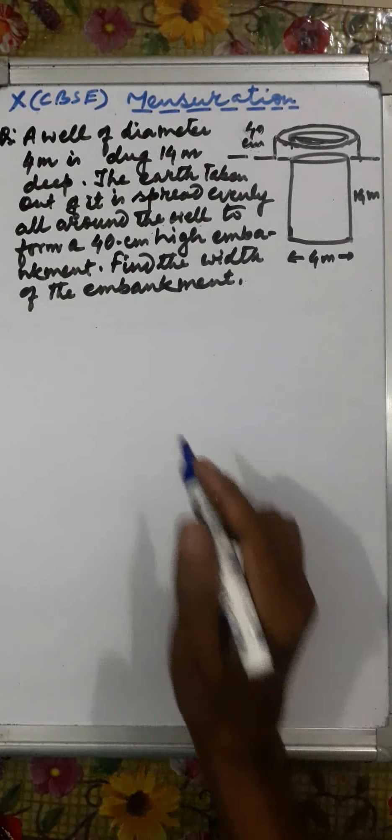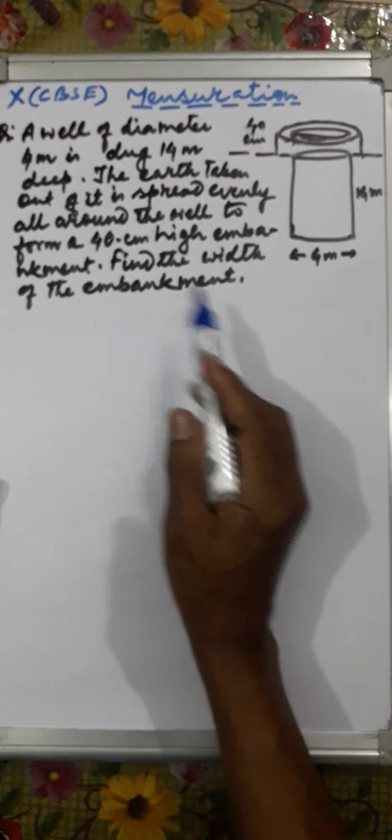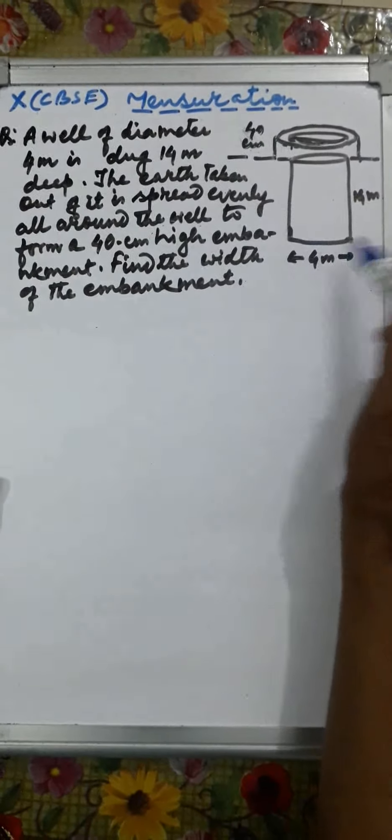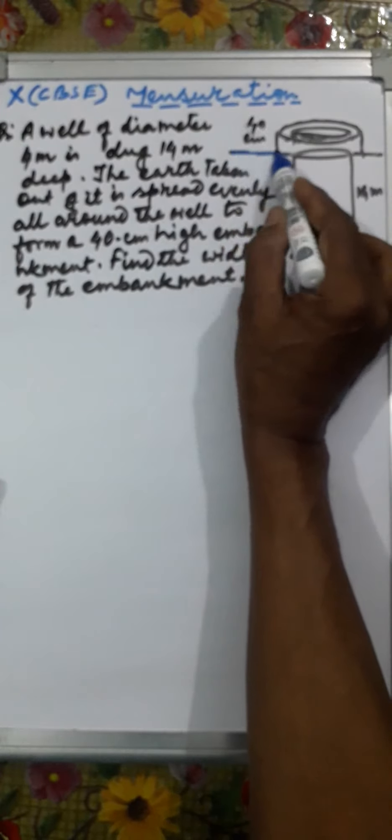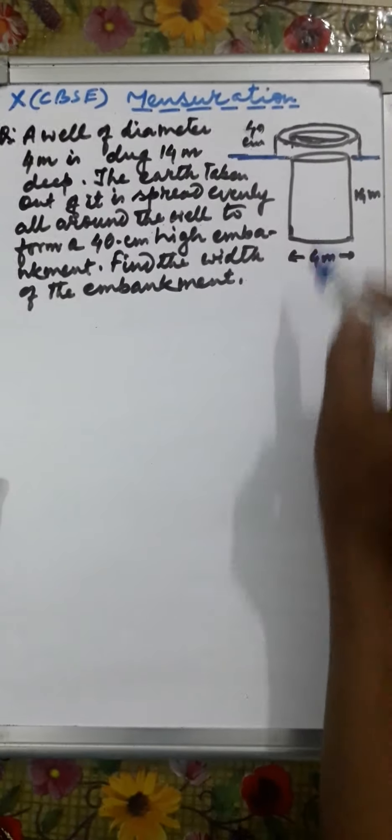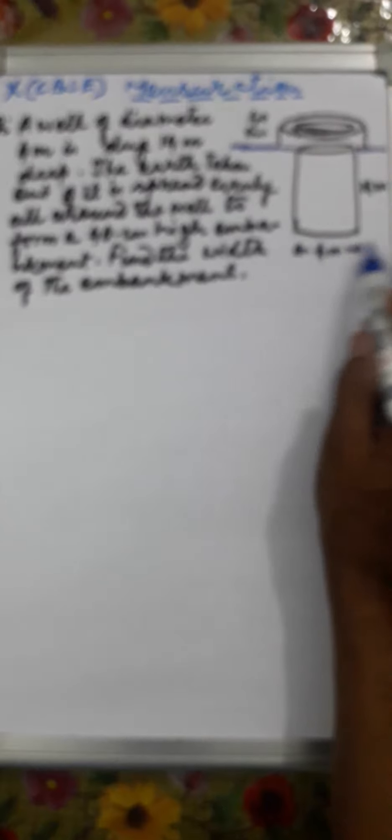Students, let us solve another question of volume and surface area for standard 10. Check the question: a well of diameter 4 meters is dug 14 meters deep. This is the well — this is the ground level — below the ground level the well is dug, and it is 4 meters in diameter and 14 meters deep.